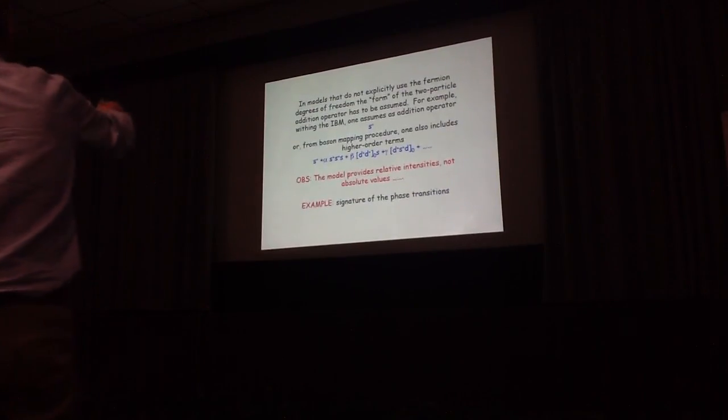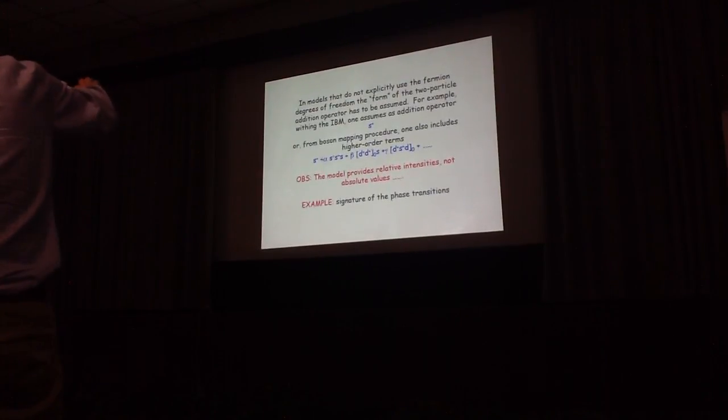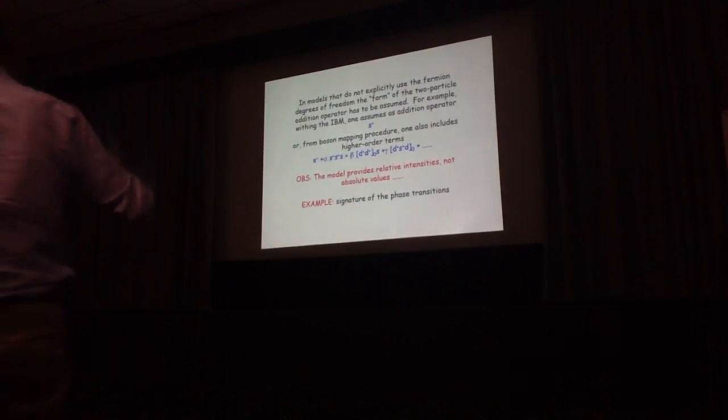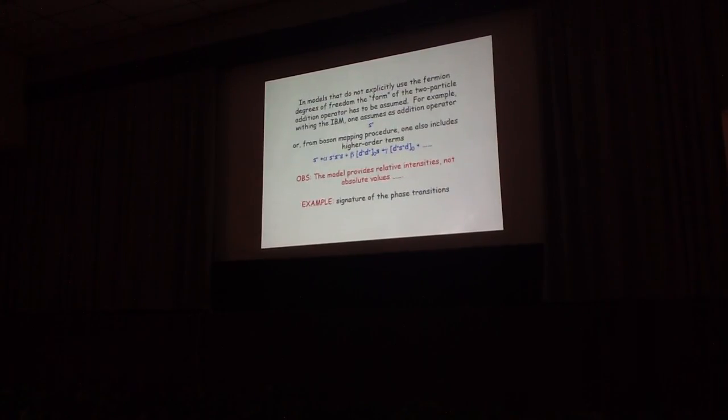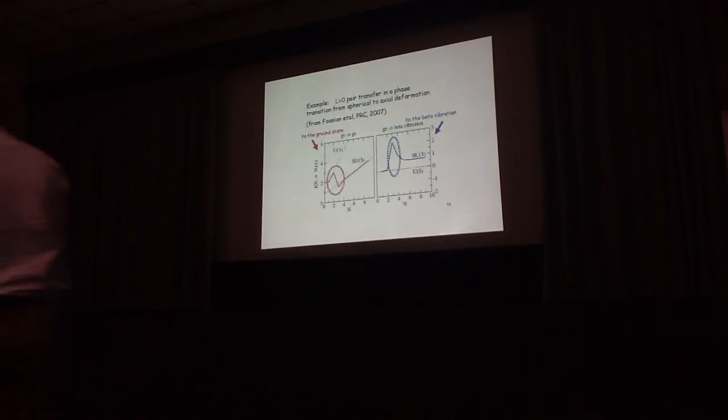It's clear that in this way, the model does not provide absolute values. You can only provide relative intensities. But, for example, we have been using that for studying signatures of phase transition.